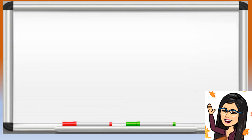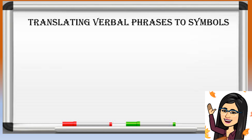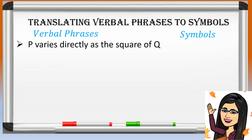Now, before solving problems, let us translate verbal phrases to mathematical symbols. Remember, direct variation denotes multiplication of a constant to another variable. For example, u varies directly as the square of q. So in symbols, u is equal to k times q squared.